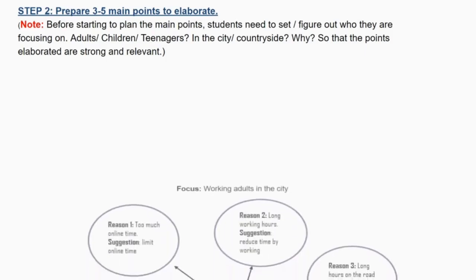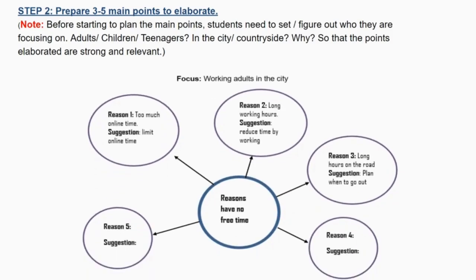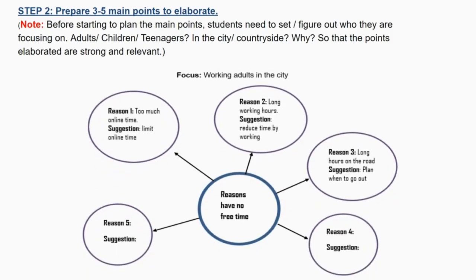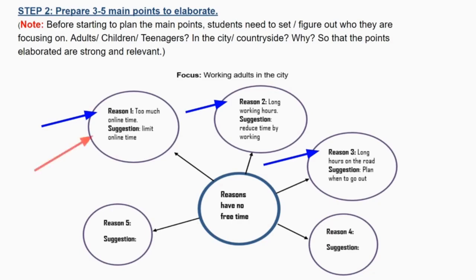The sample we are going to use focuses on working adults in the city. The bubble map shows how the plan is done. Come up with five reasons — reason one, reason two, reason three, reason four, reason five — and then a suggestion for every reason.